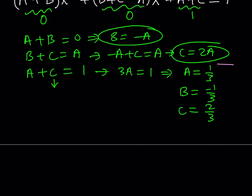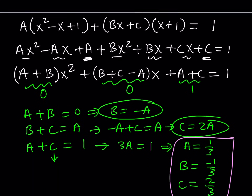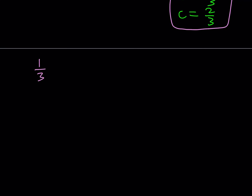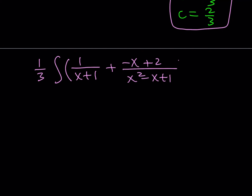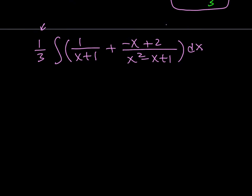Using those values, we separate this into two fractions. Since our integral had A over x plus 1 and Bx plus C in the numerator of the other one, we can factor out 1/3. Pulling out the 1/3 on the outside, we get 1 over x plus 1 plus (negative x plus 2) over (x squared minus x plus 1), times dx. The b value is negative 1, that's why we write negative x, and c was 2/3 but with the 1/3 factored out, the numerator constant becomes 2.